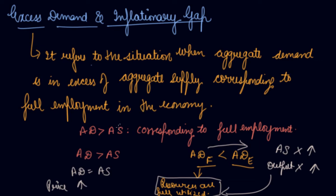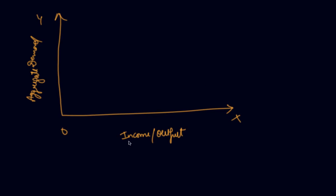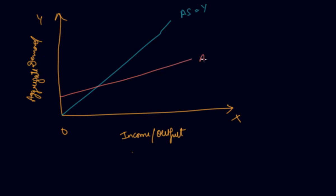This rise in price causes an inflationary gap. Let's understand this graphically. On the x-axis you take income and on the y-axis you take your aggregate demand. We know that your aggregate supply is equal to your income. This is your aggregate demand when there is full employment — this is the equilibrium level and this is the equilibrium income.